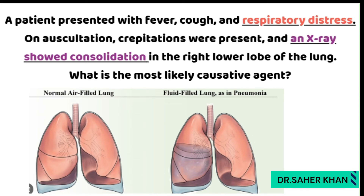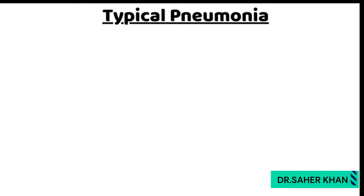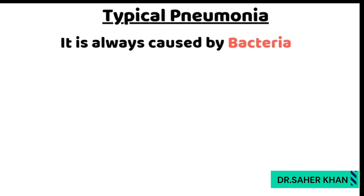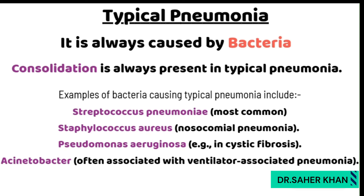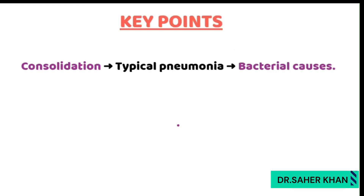Typical pneumonia is always caused by bacteria — just remember this. Another key point is that consolidation is always present in typical pneumonia. Examples of bacteria causing typical pneumonia include Streptococcus pneumoniae, which is the most common, followed by Staphylococcus aureus and Acinetobacter. The point to remember: typical pneumonia is always caused by bacteria and consolidation is always present.